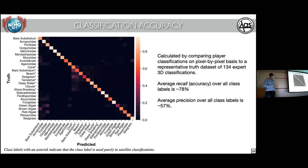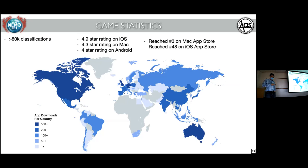The confusion matrix shows all classifications — asterisked ones are satellite only. The overall precision averages around 57% for the general public, so you really have to run everything through the classification filter to get trustworthy results. The app has received quite a good rating online and is well received. Statistics show where it has been downloaded the most.